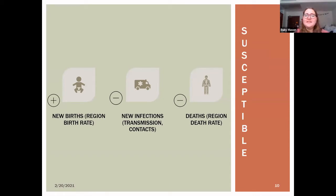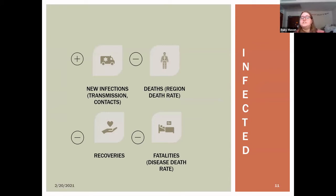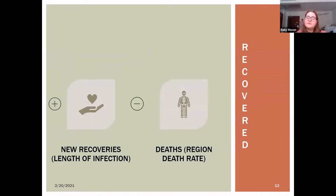For the susceptible population, since everyone is susceptible and there's no vaccine, the only way to enter is to be born, represented by the natural birth rate. To leave, you become infected or die from natural causes. In the infected population, you enter by becoming infected and leave through natural death, recovery, or fatality. In the recovered population, you enter after recovering and leave via the regional death rate.